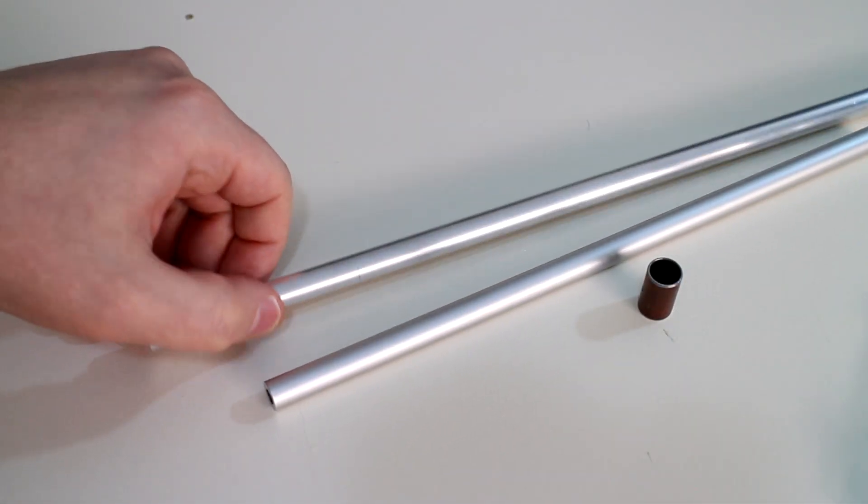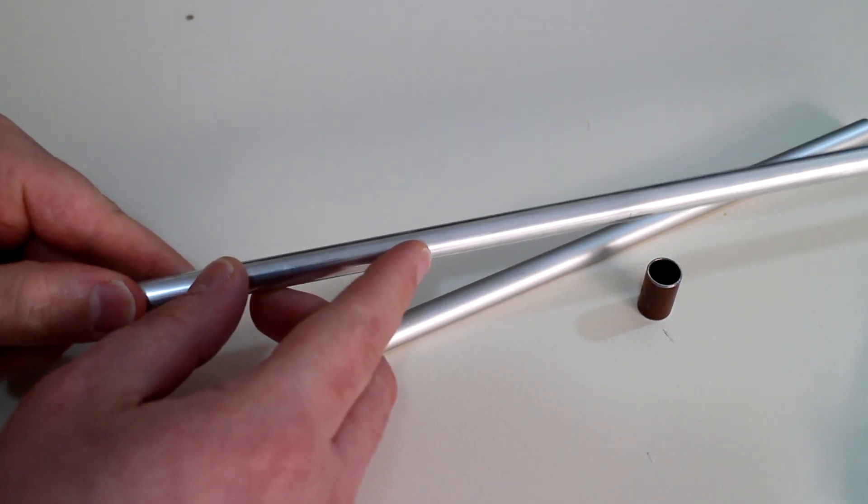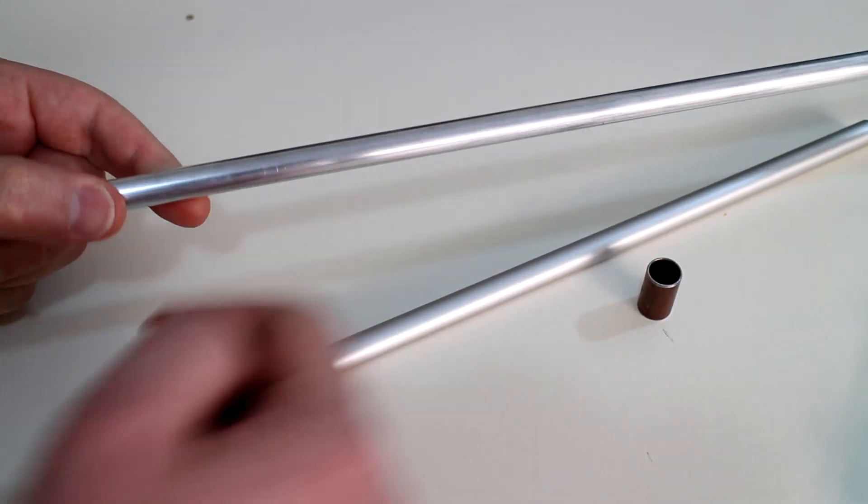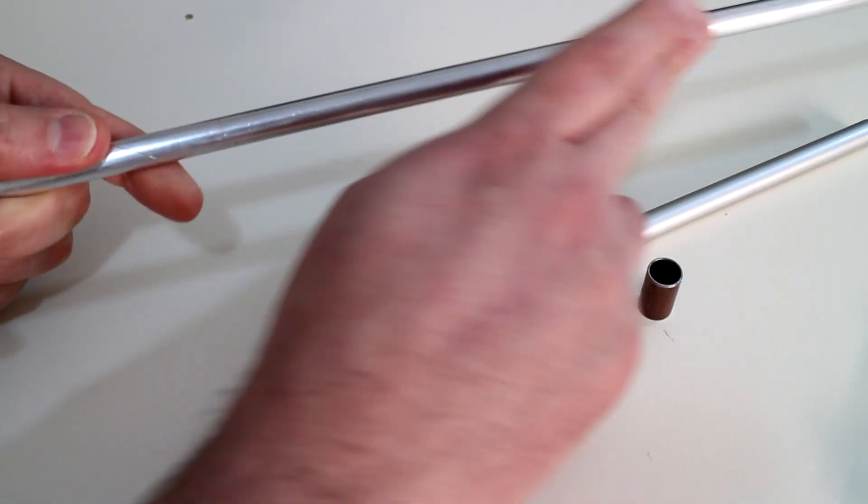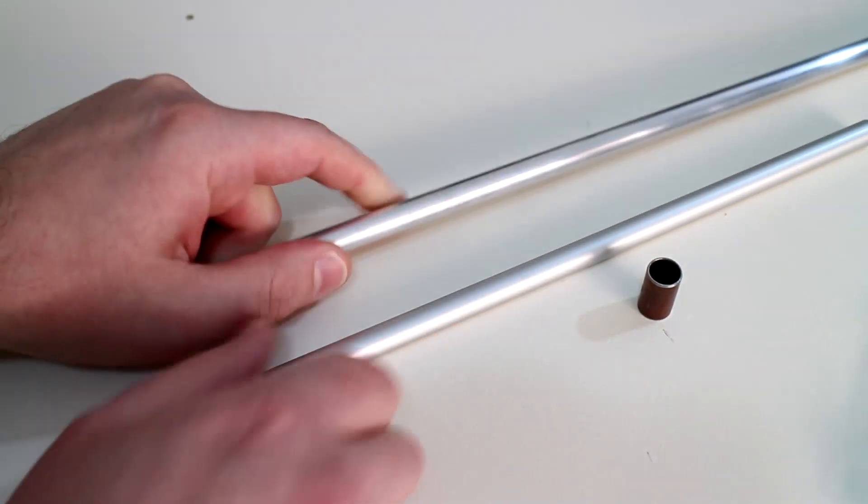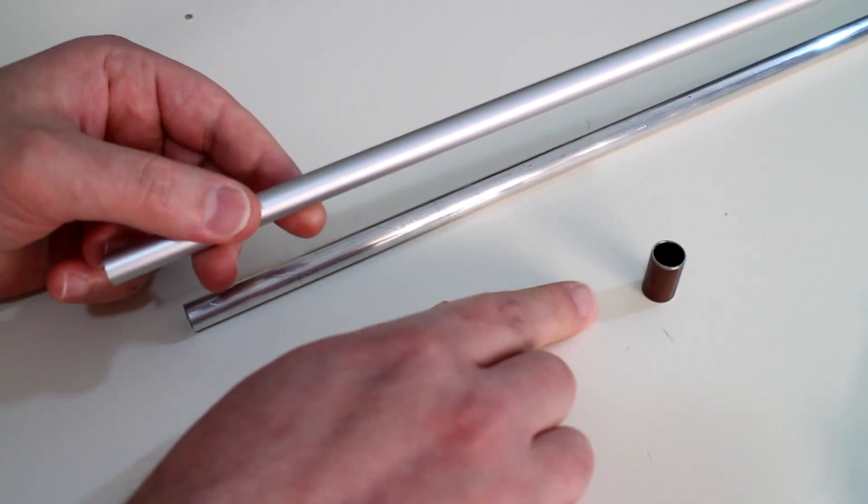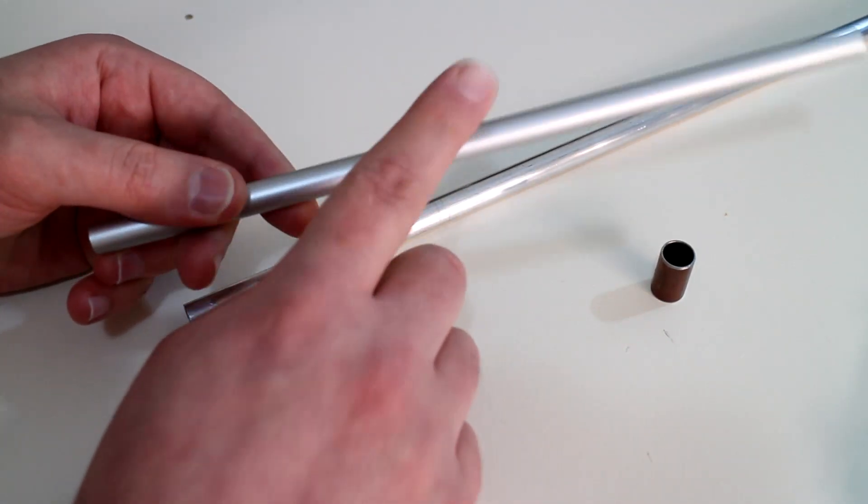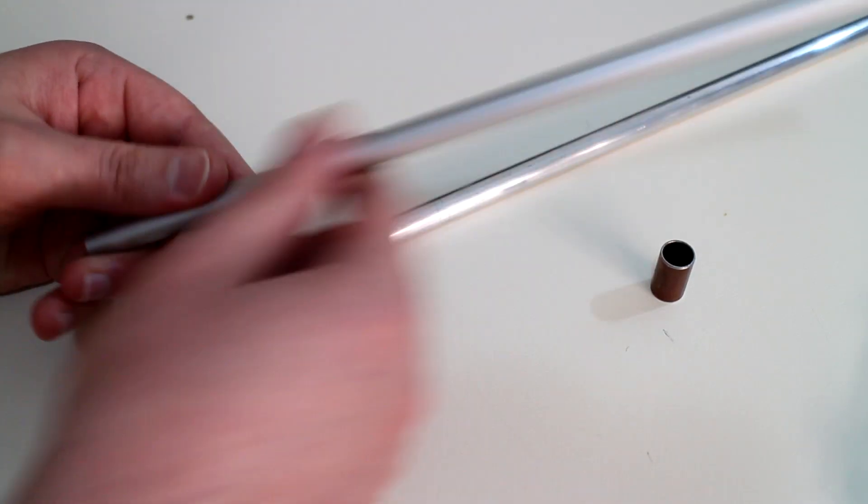When using the raw aluminum with these self-lubricating bushings, I noticed in general use with these rods after a couple of minutes, it was leaving like a black soot or residue behind on the rails. But on the anodized aluminum after the same amount of time, there was no black soot left on here at all.